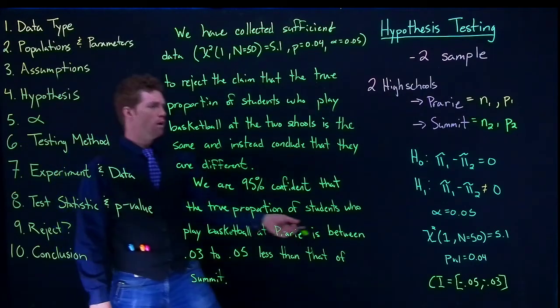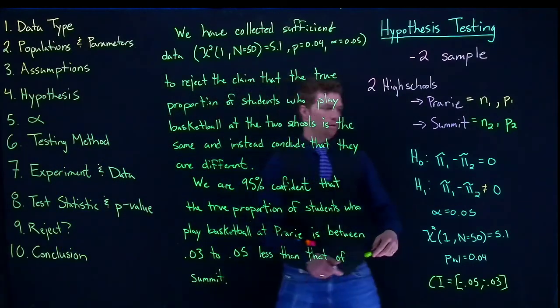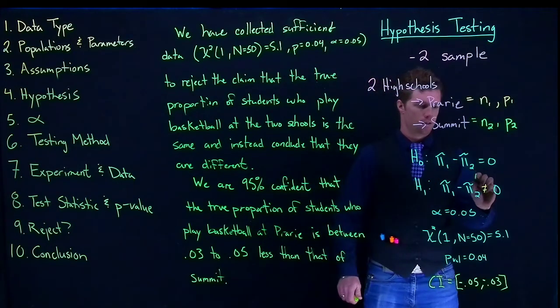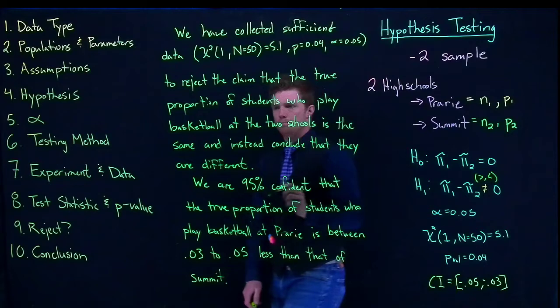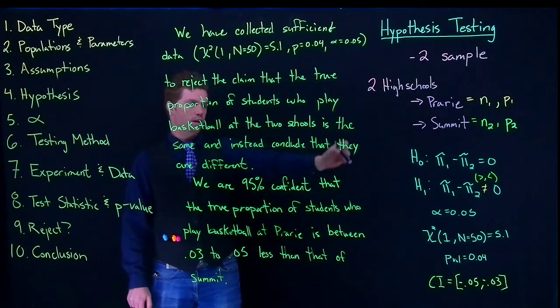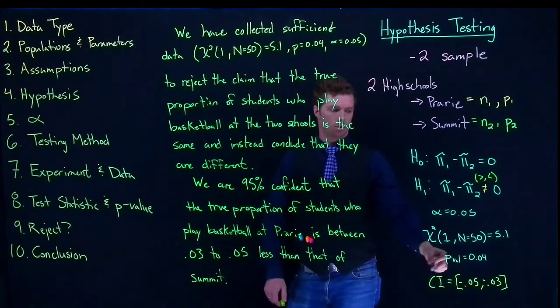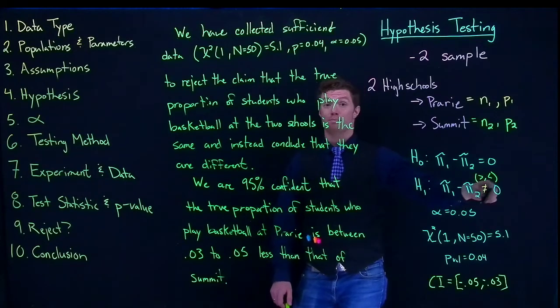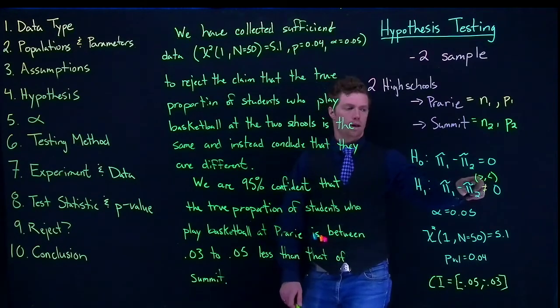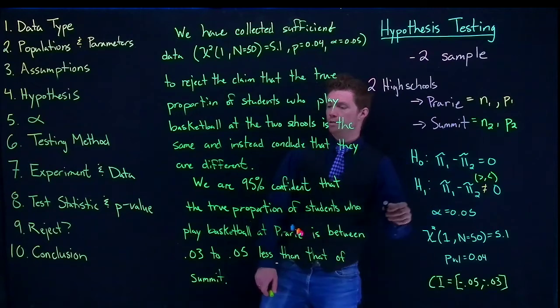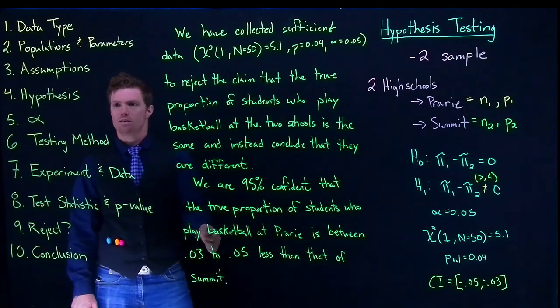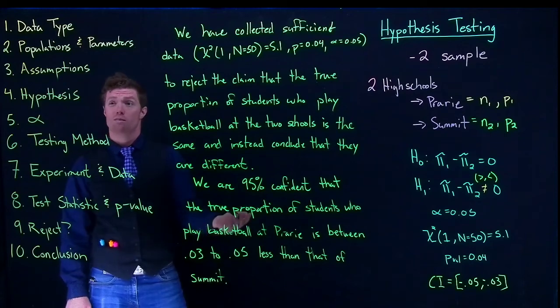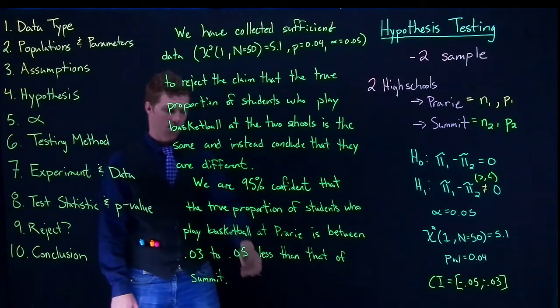So if we had done a one-tail test, remember if this had been instead a greater than symbol or a less than symbol, our conclusion would have been able to say that one of these was bigger than the other or smaller than the other, because we had actually made that in our alternative hypothesis. And if we had done a one-tail test, remember we would say that it's at least however much more, or no more than this much less than the other.